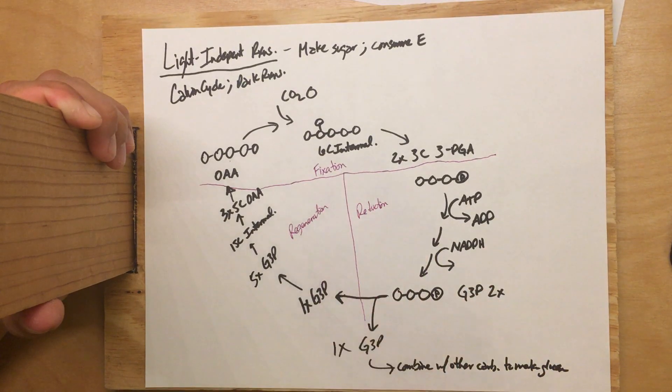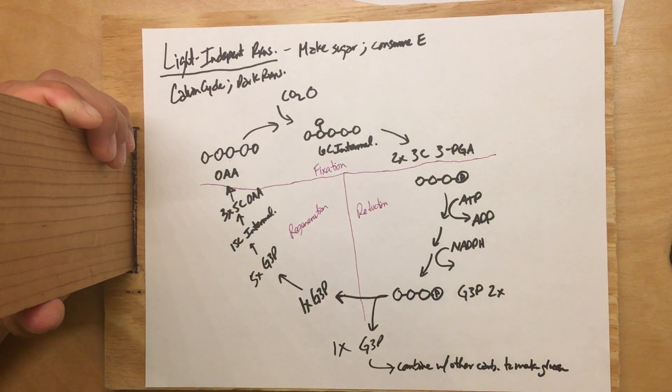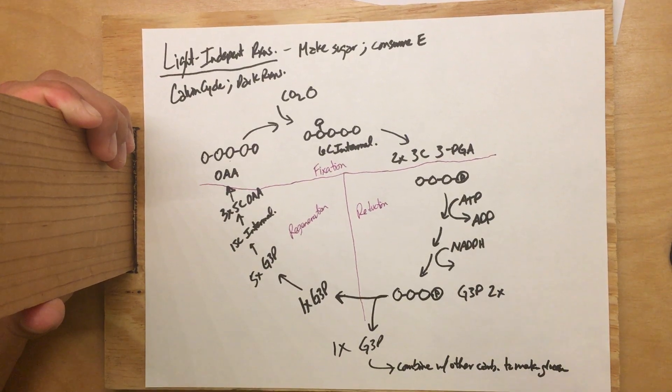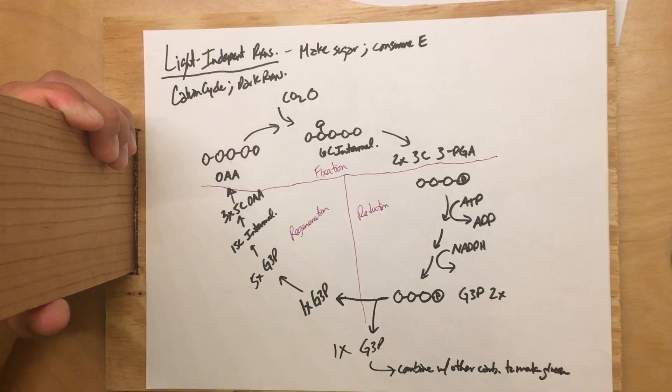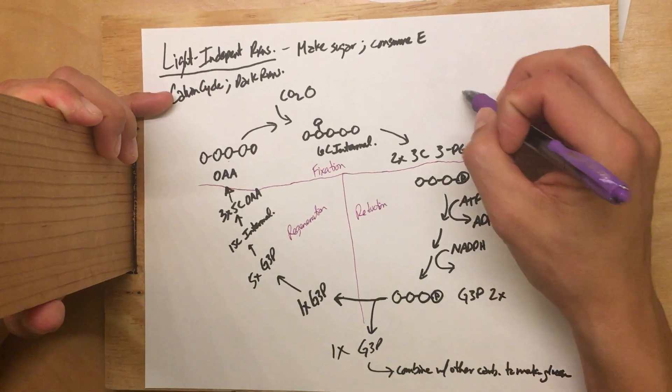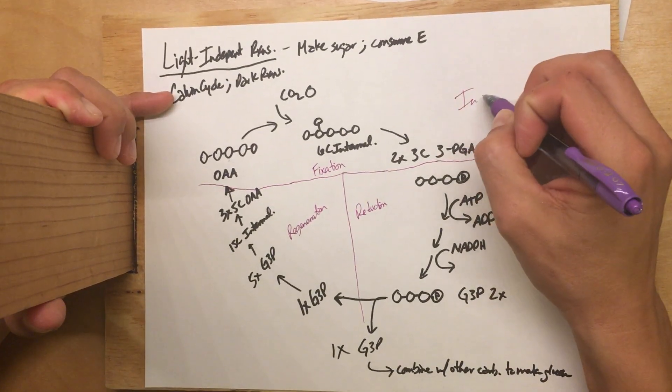Now you're just concerned with getting back to where you began, and so this third part is called regeneration. During regeneration you are trying to remake the molecule that you began with. So we've got fixation, reduction, and regeneration — those are the three parts of the light-independent reactions.